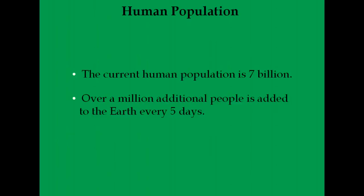The human population is currently at seven billion. We reached seven billion in March of 2012 and are expected to reach eight billion around spring 2024 — only 12 years to add 1 billion people. In 1960, there were only three billion people on Earth. It did not take very long — just 50 years — to more than double. Over a million people are added to the Earth every five days. The current growth rate is about 1.14%, almost half of what it was in the 1960s.